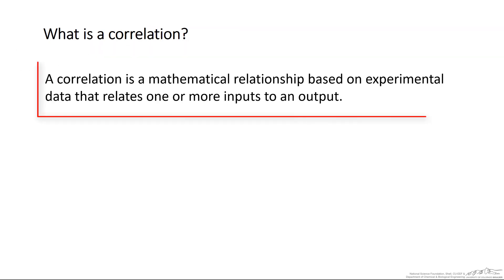In this short screencast, I'm going to remind you what a correlation is. A correlation is a mathematical relationship based on experimental data that relates one or more inputs to an output. The important thing here is that these correlations are experimentally derived.